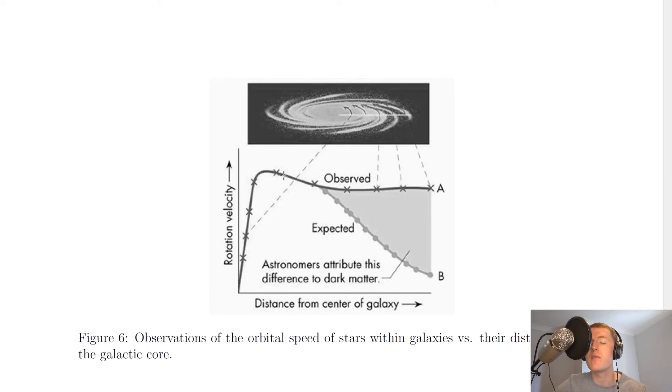And then as we get further and further away from the galactic core which is in the middle, we expect the speed of the stars to then drop off like this. And that is due to the amount of mass that we can visibly see.